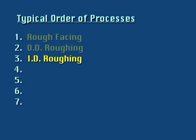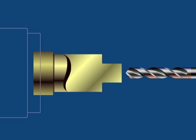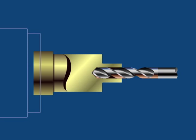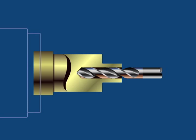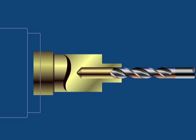ID roughing operations would be the third process. This might begin with a drilling sequence if bar stock is being used, then finish with a boring, reaming, or ID turning sequence.